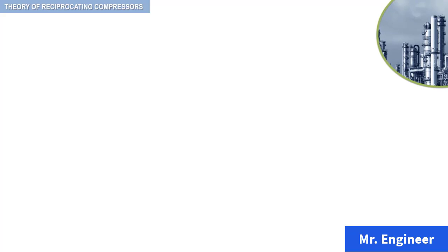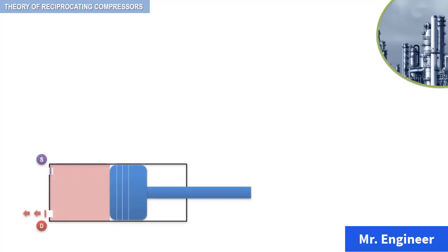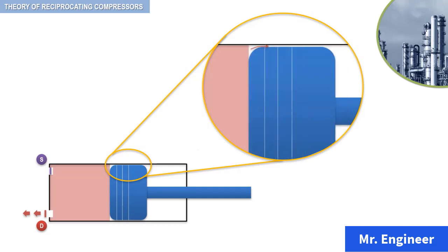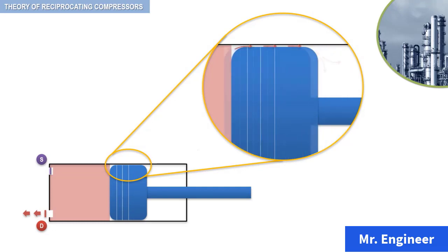To better illustrate the concept of piston ring leakage, let's observe the piston movement during a compression stroke as depicted here. This leakage allows gas from the compression chamber to escape past the piston into the other end of the cylinder.